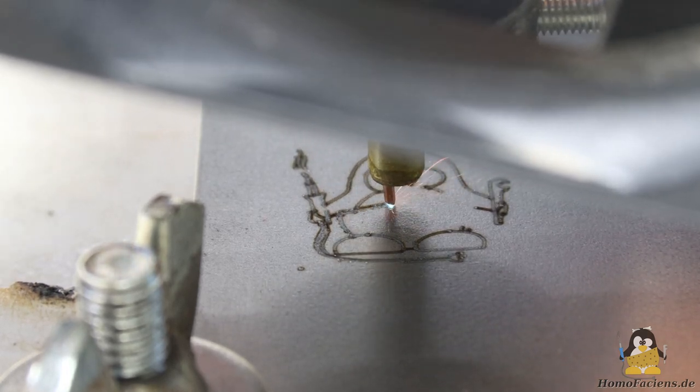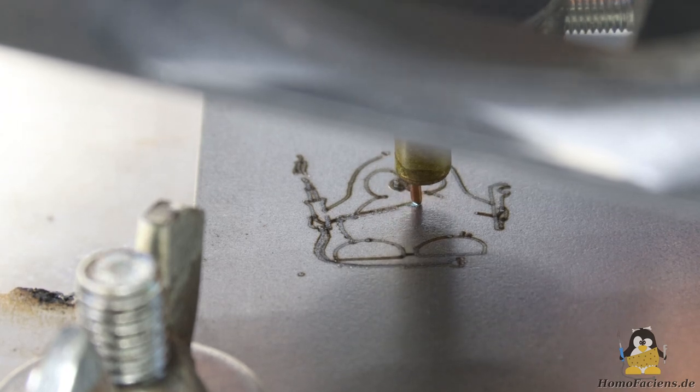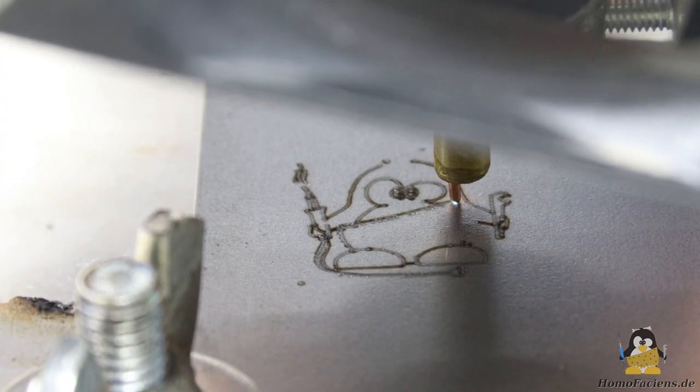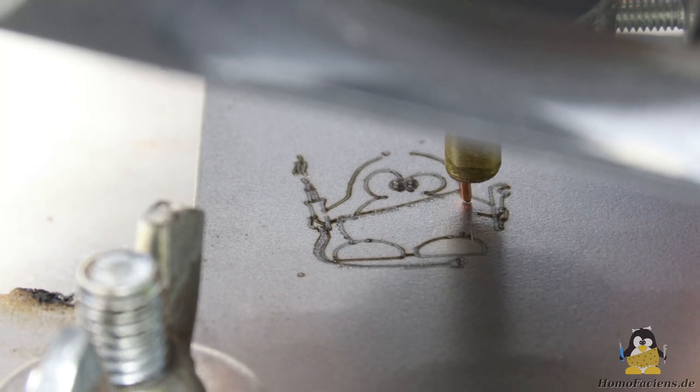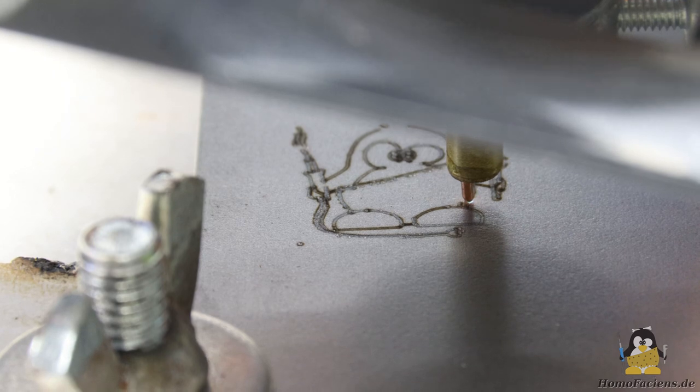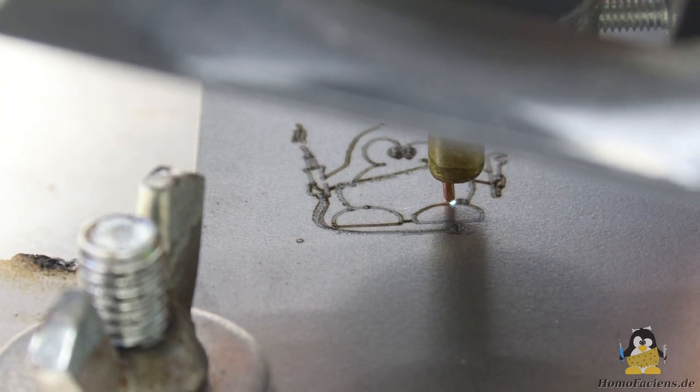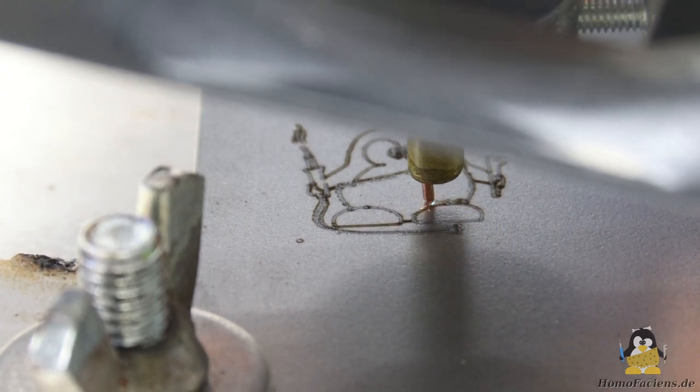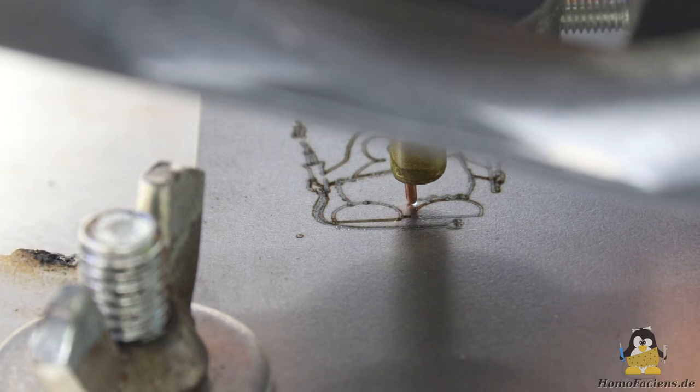As you can see, the electrode occasionally sticks to the workpiece; the hammering is obviously a little too weak. The feed rate is set to 1mm per second, the set movement to 10mm to give the electromagnet a few breaks, despite the fan.